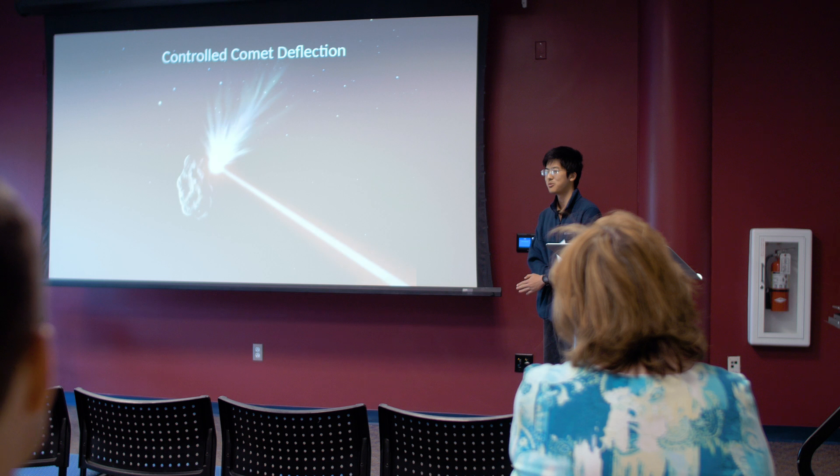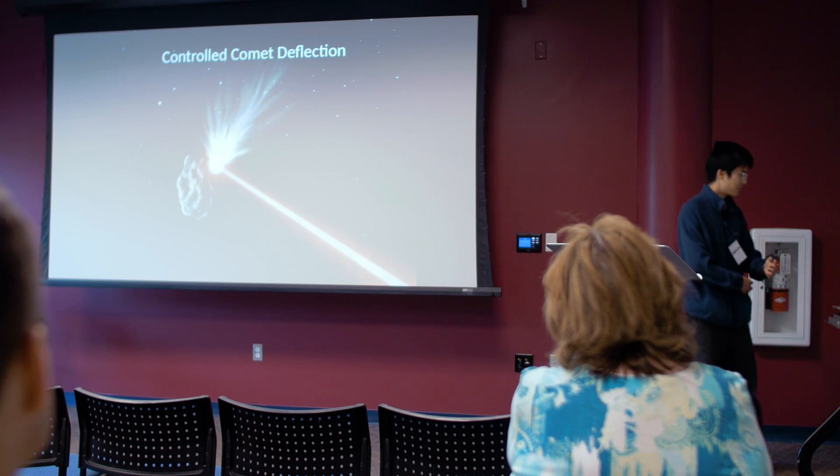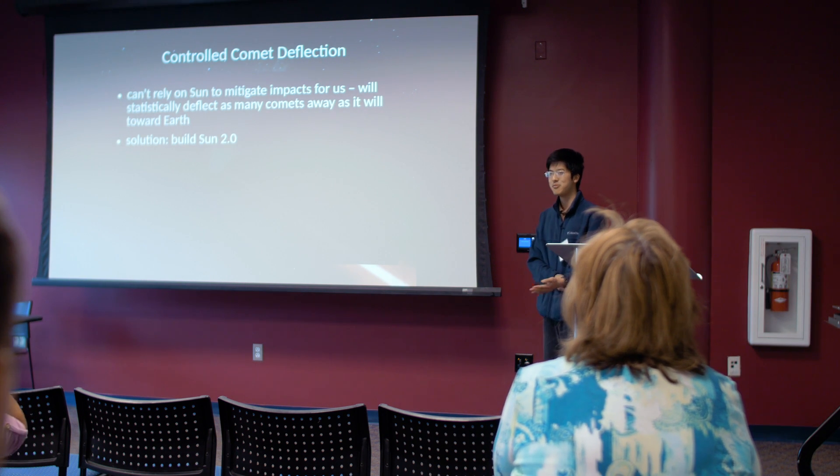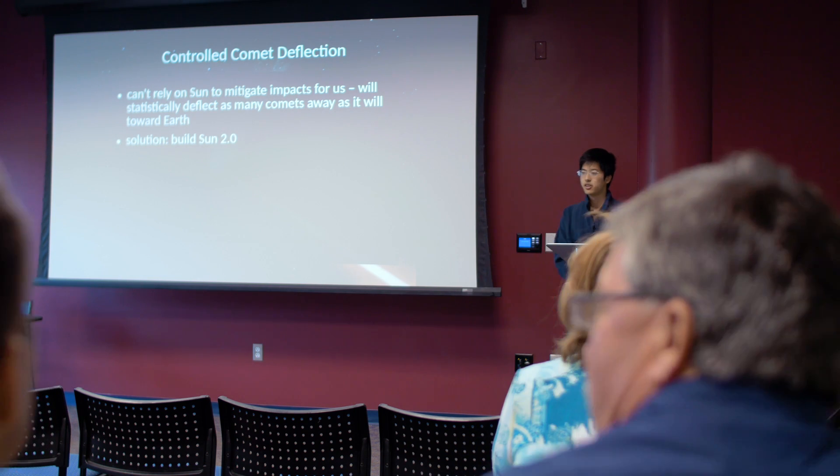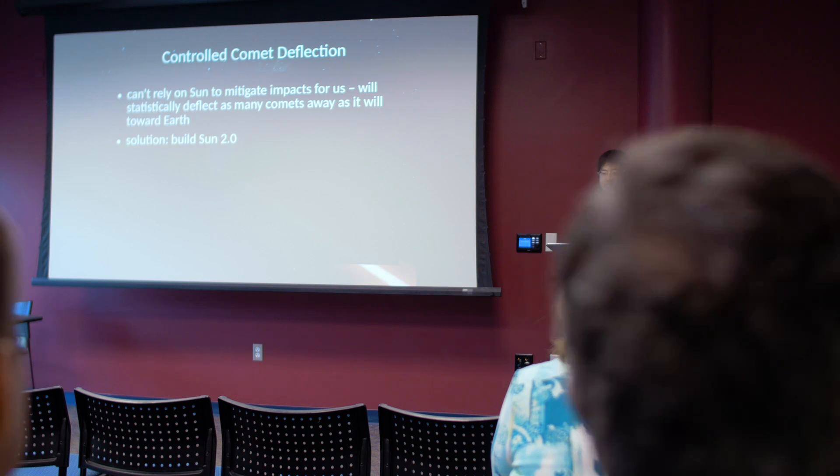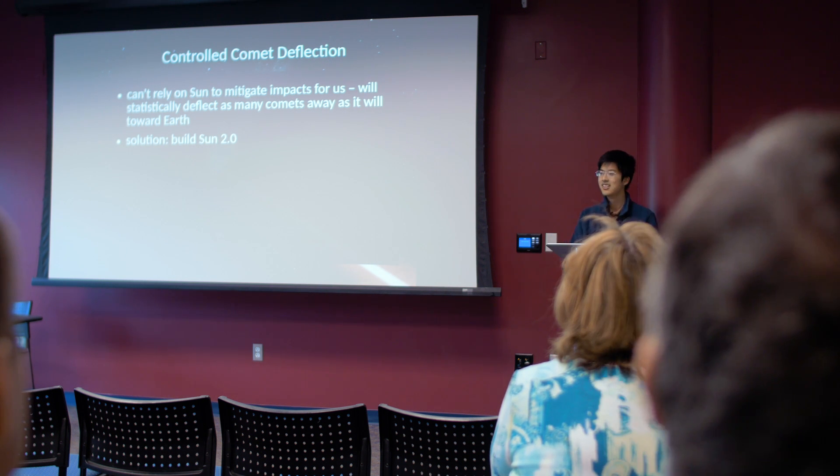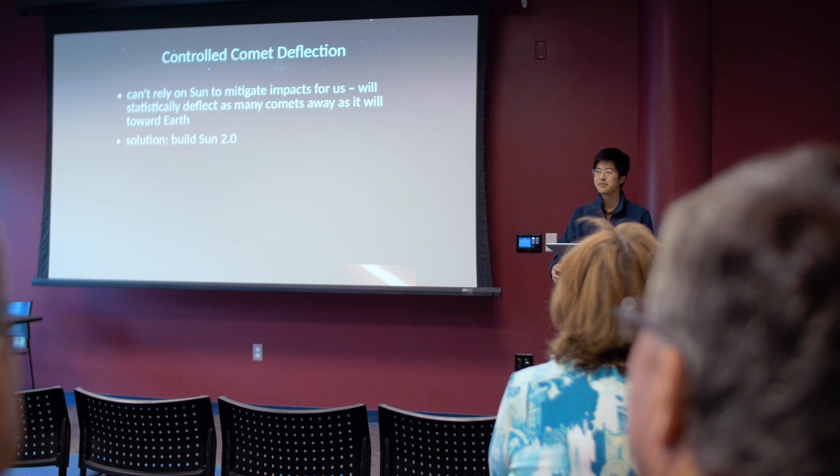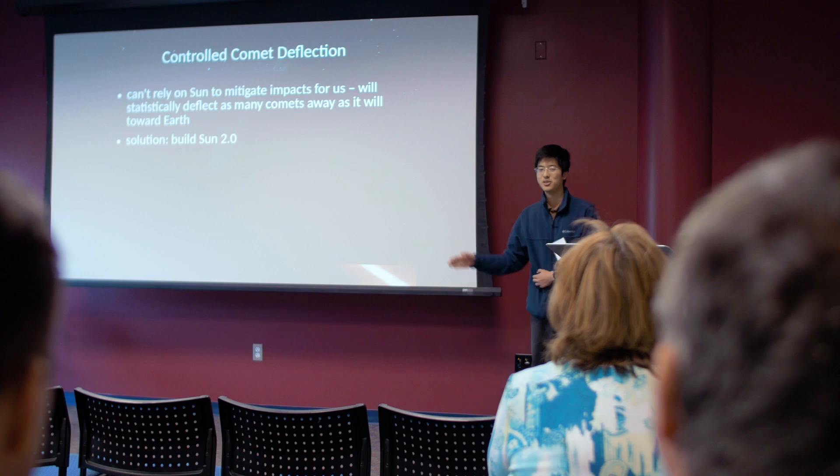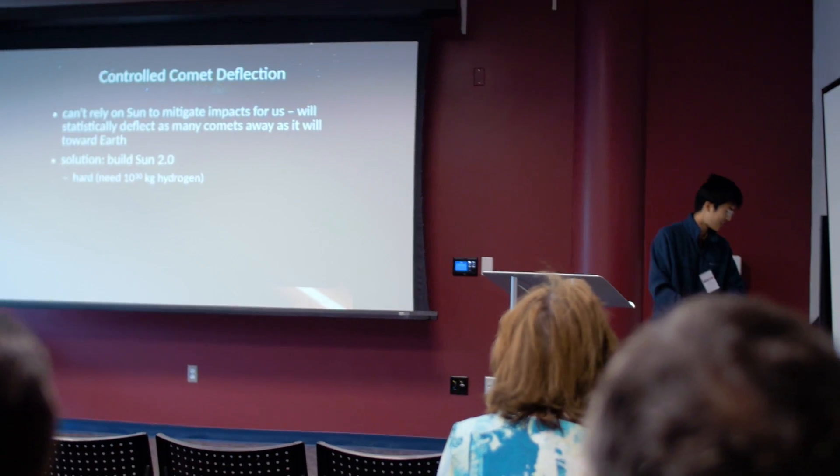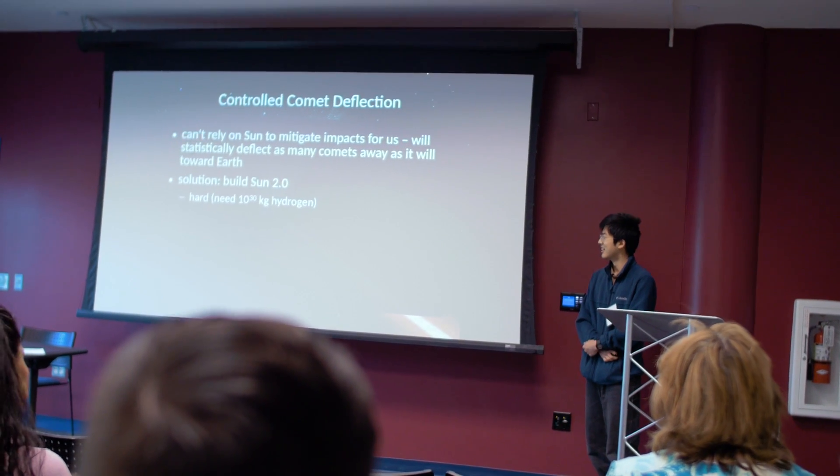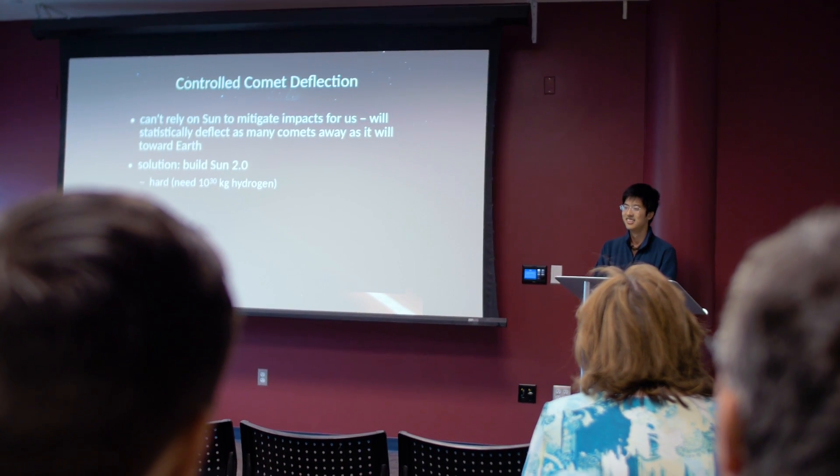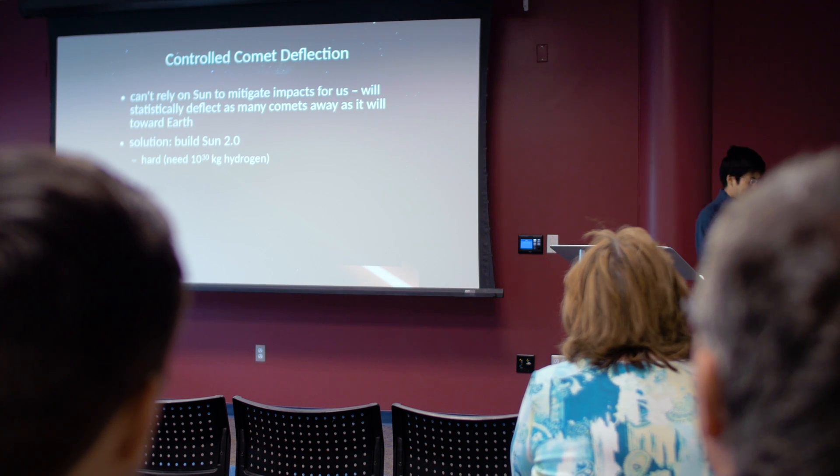Alright. So we want controlled comet deflection. We don't want to just let the sun deflect the comet for us. It would be nice, except the sun deflects as many comets into the Earth as it deflects away, right? So we need a comet that you can actually, we need essentially a sun that you can control. It can turn on and turn off, right? Because if the sun with its forces actually push the comet into the Earth, well, we want to turn the sun off so that the comet no longer repression do yours, right? So we want to go with sun two, basically. But that's a little hard. I mean, you need like 10 to 30 kilograms of hydrogen. And hydrogen is, well, it's not too expensive, but 10 to 30 kilograms of it. That's still kind of expensive. So we can't really build a sun or a second sun.